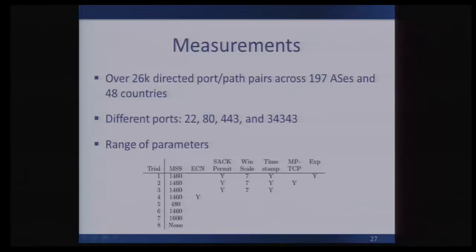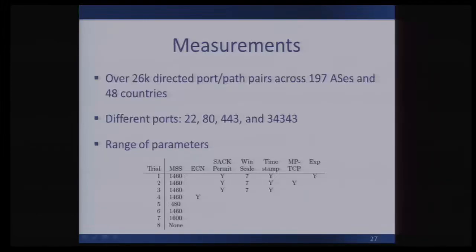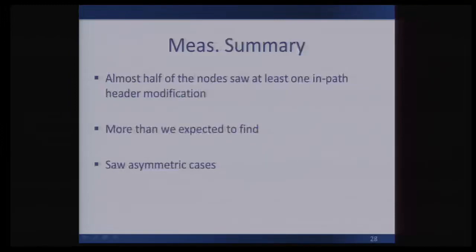We used our tools in measurements run on the general internet using PlanetLab and also CAIDA's Arc. The goal was: if there was some sort of interesting behavior happening, we wanted to find it. We tested a range of different ports and parameters — for instance, prior work has shown that some paths exhibit port-specific behaviors where a middlebox may be operating on one port but not another. To summarize our measurements at a high level: almost half the nodes we tested saw at least one impacted header modification to one of the ports we tested. This was more than we expected, especially given PlanetLab is mostly hosted on university networks, which should be more open.